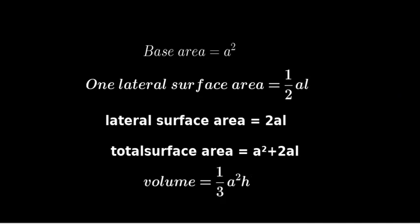Then the volume of the square pyramid. The general formula of any pyramid is (1/3) × base area × height. Here the base area is A² and the height is H. Therefore, the volume of a square pyramid equals (1/3) × A² × H. If you have the base edge, lateral edge, slant height, and height, you can use these formulas easily to solve problems.